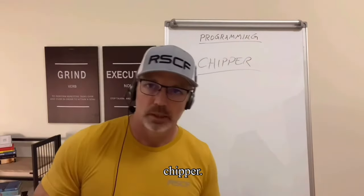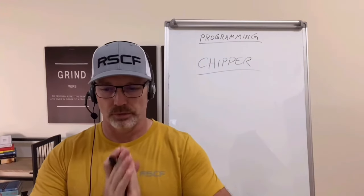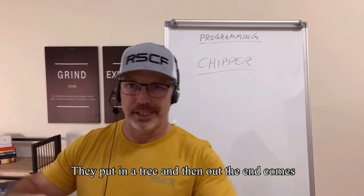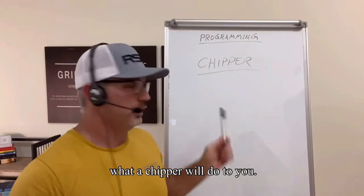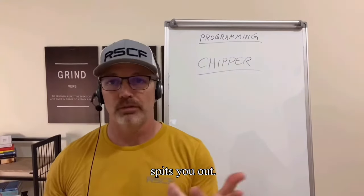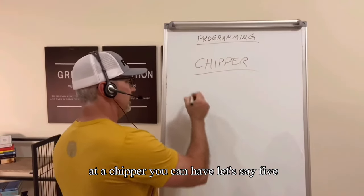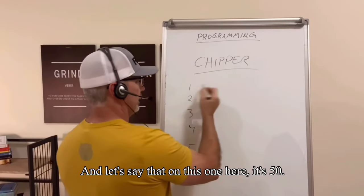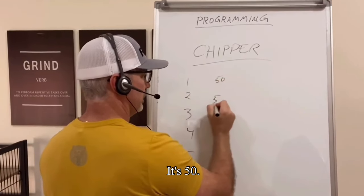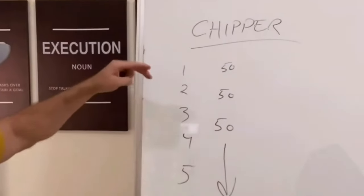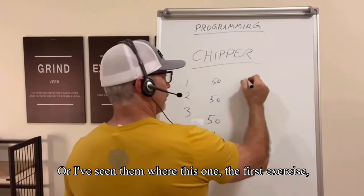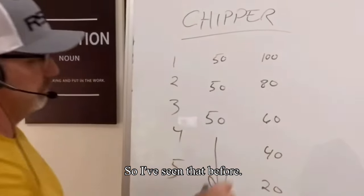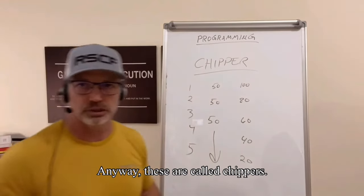The last one we're going to talk about is a chipper. If you've ever driven by a neighborhood where they have trailers pulling behind a truck sticking trees inside and grinding them up — they put in a tree and out comes mulch — that is a chipper, and that's basically what a chipper workout will do to you. When you're looking at a chipper, you can have five different exercises — you program it. For example, each exercise could be 50 reps across the board, or you could do 100, 80, 60, 40, 20 — chipping away at it little by little.